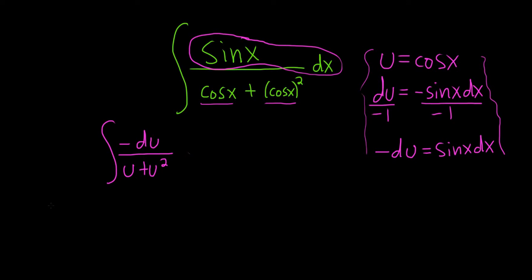So notice you can pull out the u on the bottom. So this is negative 1 over u parentheses, and then 1 plus u. Yeah, there it is.